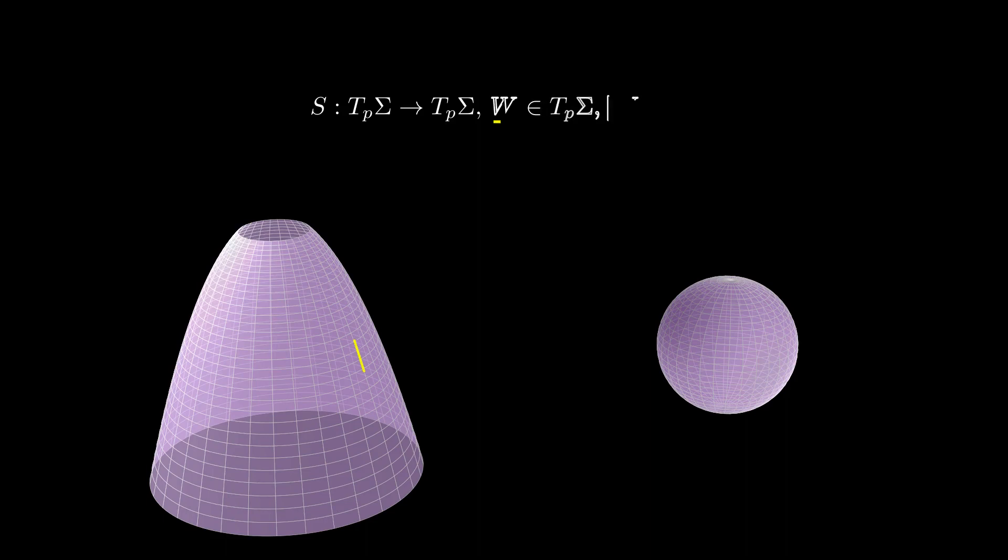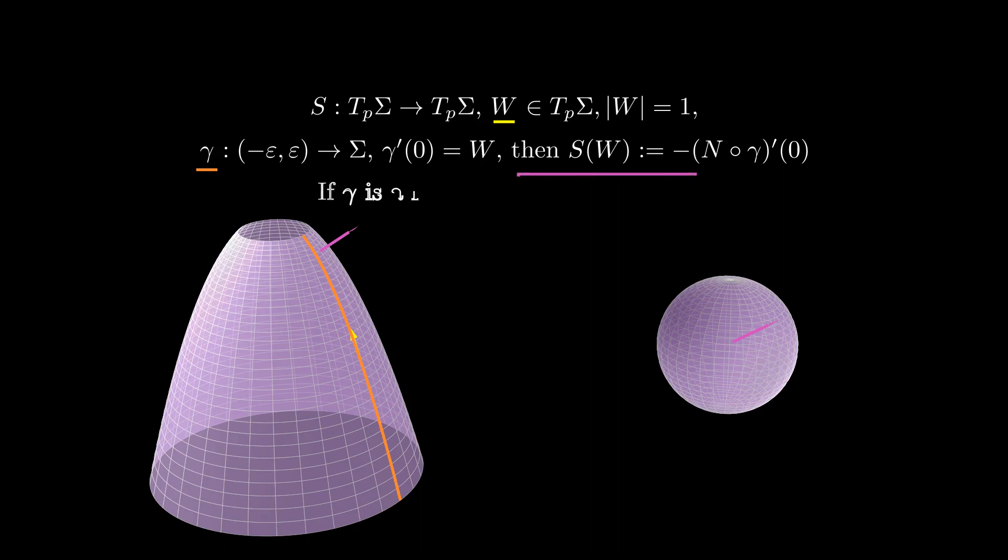Recall that to compute the shape operator in a certain direction w, we take any curve with velocity w, in this case we can take a meridian, and take the derivative of n along such curve. So one principal curvature is given by how much the curve gamma is bending in the direction of n, which in absolute value coincides with the curvature of gamma.